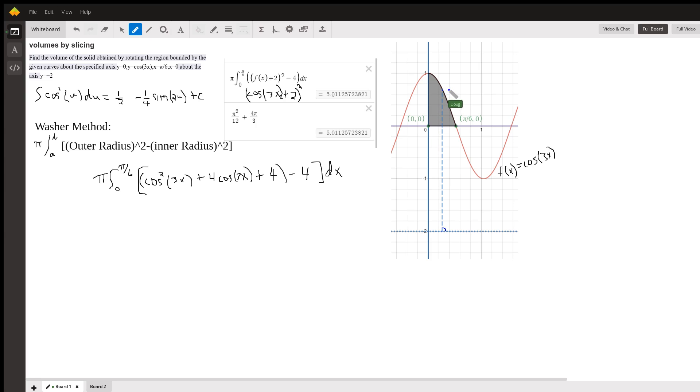So the outer radius... by the way, in order to do this problem manually, you have to know that the antiderivative of cosine squared is this thing right here. This is supposed to be a plus sign.